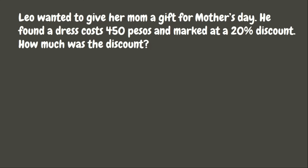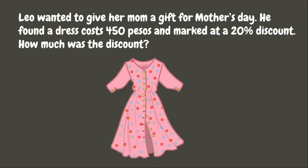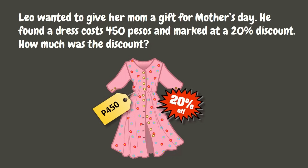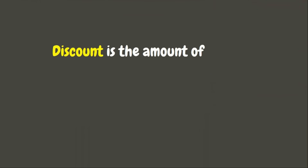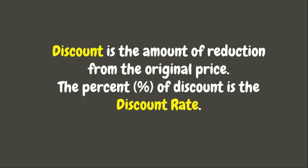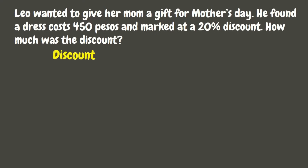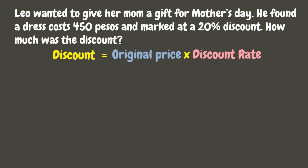Leo wanted to give his mom a gift for Mother's Day. He found a dress that costs 450 pesos and is marked at a 20% discount. How much was the discount? Discount is the amount of reduction from the original price, while the percent of discount is the discount rate. To solve for the discount, we multiply the original price and the discount rate. The original price of the dress is 450 pesos, while the discount rate is 20%.